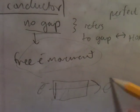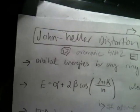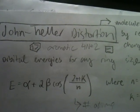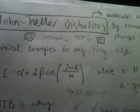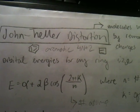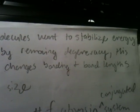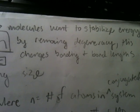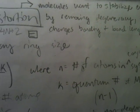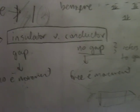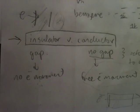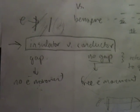To summarize: we learned about Jahn-Teller distortion, which explains why benzene is a perfectly symmetrical hexagon and why cyclobutadiene has to distort — it wants to lower its energy and stabilize by removing degeneracy, changing bond lengths and bonding order. We also covered why insulators and conductors behave the way they do.